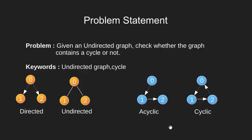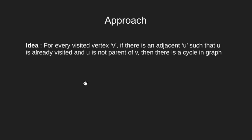Let's now look at the approach to the problem statement. Cycle detection can be done using the depth first search technique. If you are not aware of it, you can go through the tutorial we covered earlier. The basic idea is to see that for every visited vertex V, if there is an adjacent vertex U such that U is already visited and U is not the parent of V, then we say we have a cycle. Here, parent simply refers to the node we are just coming from.